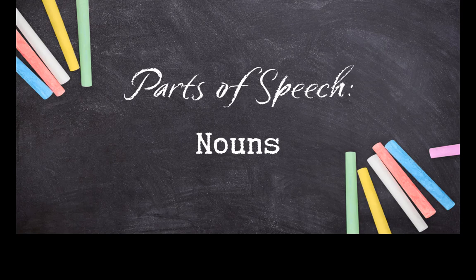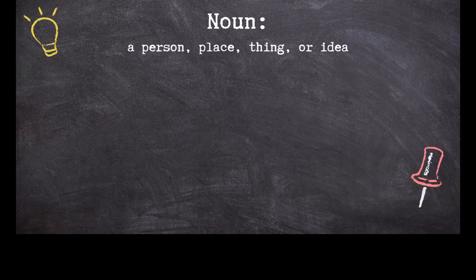A noun is a person, place, thing, or idea. It's the who or what that a sentence is about. Let's take a look at some different types of nouns.